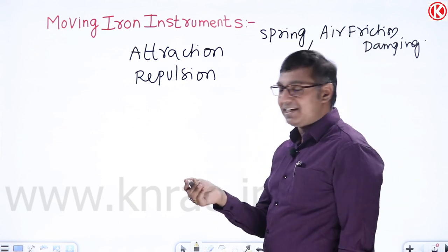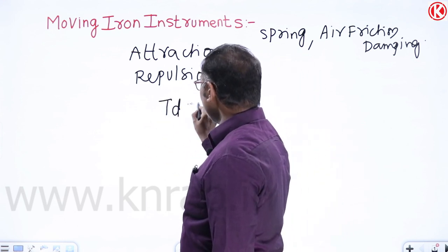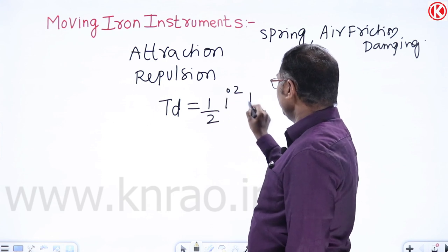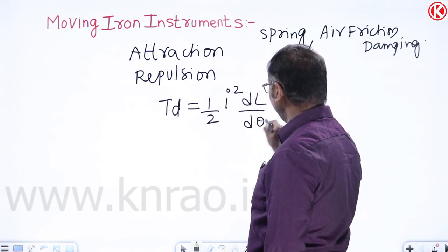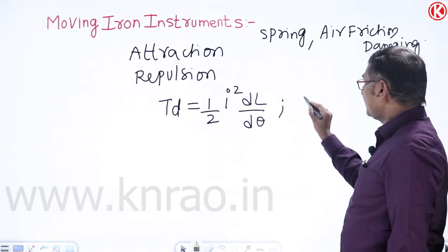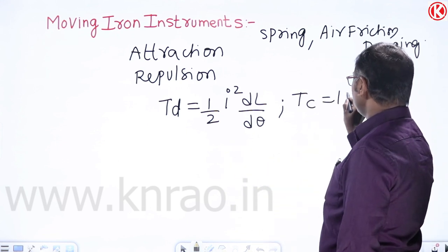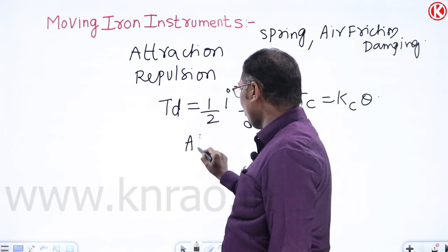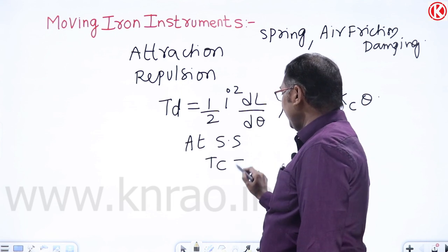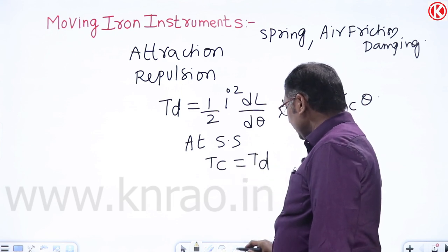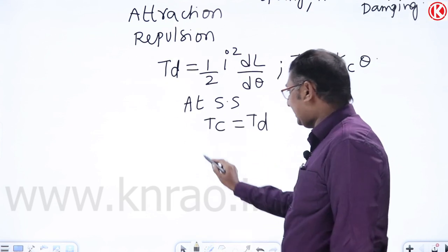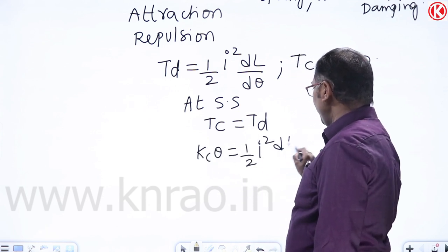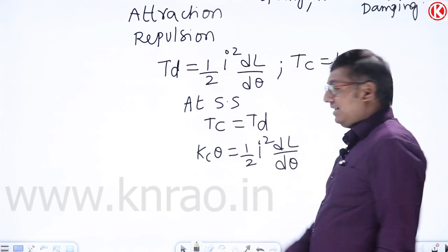The deflection torque equation is: Td = ½i² dL/dθ. The controlling torque with spring control is Tc = Kc·θ. At steady state, controlling torque equals deflection torque: Kc·θ = ½i² dL/dθ.